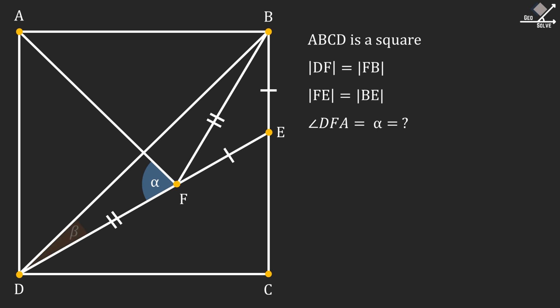First, let's call this angle as beta. Since triangle DFB is an isosceles triangle, this angle will also be beta. Now we can use exterior angle theorem to find the angle BFA as 2 beta.